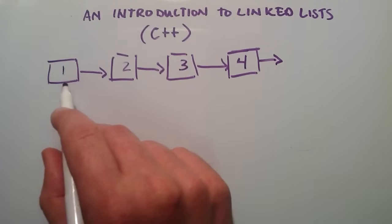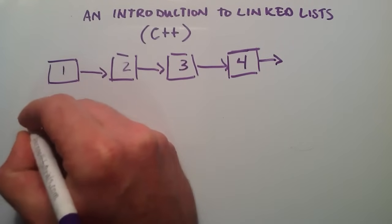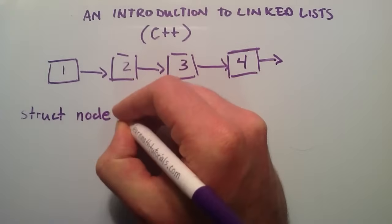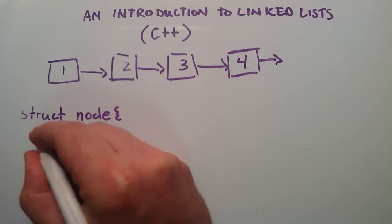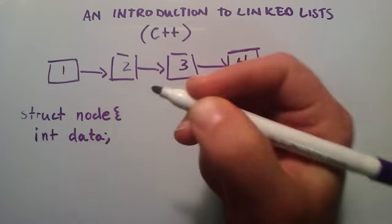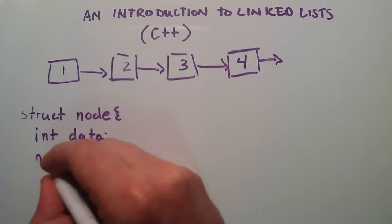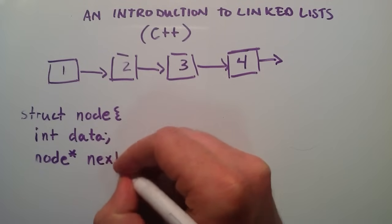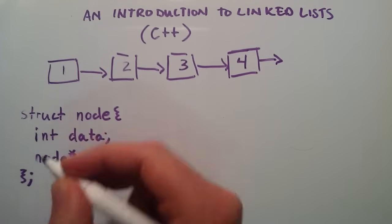The first thing we want to cover is how do we make one of these nodes? Well, in C++, we can simply type in struct and then name our struct 'node', put our opening curly brace. Inside the struct, I'm going to have an int named 'data', and then another data member which is actually going to be a node pointer, and we'll call that 'next'. Then we put our closing curly brace and semicolon to finish the struct.